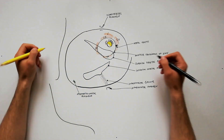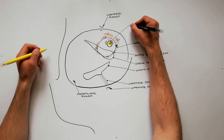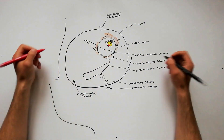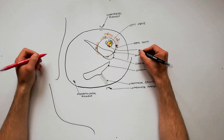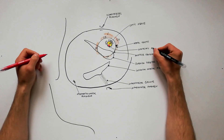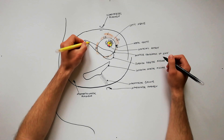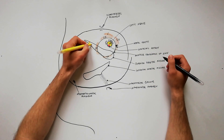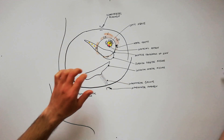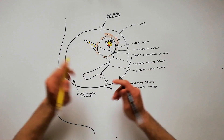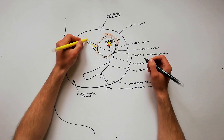Through the optic foramen pass the optic nerve and the ophthalmic artery. Through the superior orbital fissure, lateral to the annulus tendinosus of Zinn, are passing from lateral to medial: the lacrimal nerve, the frontal nerve, and the trochlear nerve.